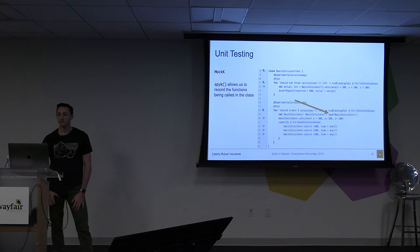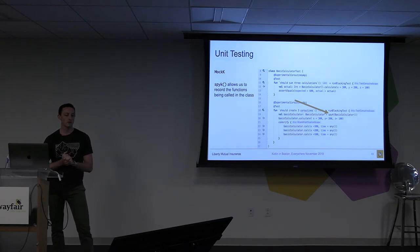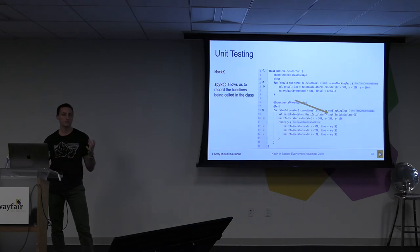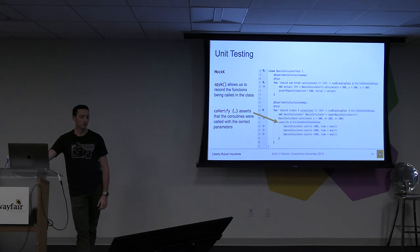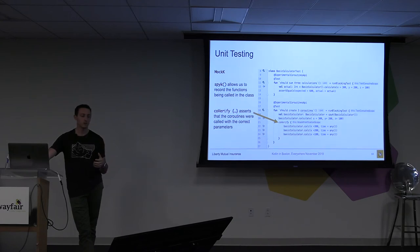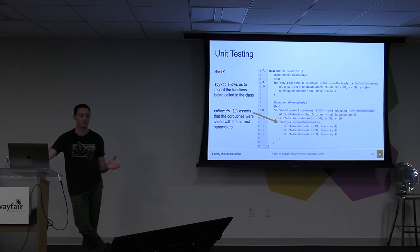Diving into MockK: we can use it in multiple ways. SpyK lets you spy on the functions of a class. In this example, we're spying on BasicCalculator — SpyK still returns the actual class object. Then we use MockK's coVerify, which allows us to assert that coroutines were actually called with the correct parameters. As opposed to a non-coroutine — if calculate was not a suspending function, we would just use MockK's regular verify. That's about the only difference — MockK has coVerify for coroutines and verify for non-coroutines.